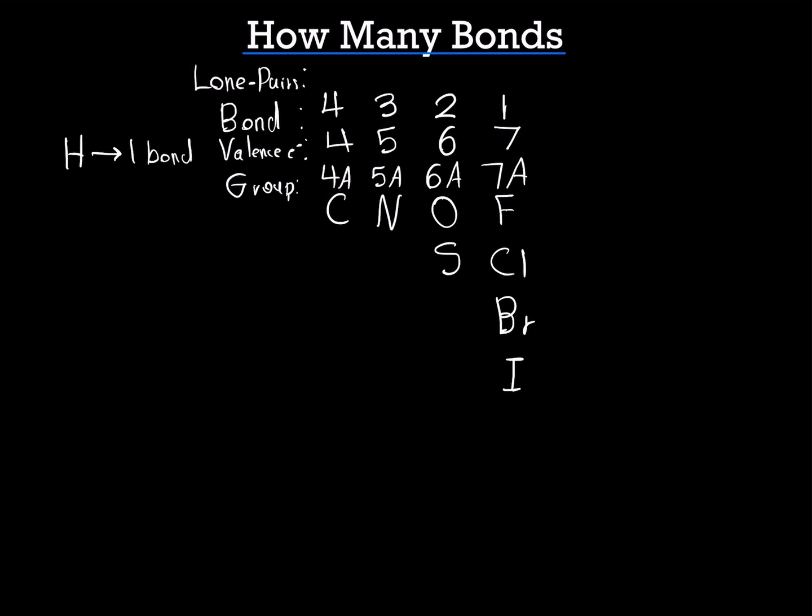So how many lone pairs are each of these elements going to have in their neutral state? Well, carbon has 4 bonds. And if each bond takes up 2 electrons, that means it's using 8 electrons to make bonds. So it doesn't have any extra electrons to create any lone pairs. So carbon has 0 lone pairs. Nitrogen is using 6 of its electrons to make 3 bonds. Because it needs 2 of its electrons for each bond. So it's going to have 2 electrons left over. And when you have a lone pair, it's going to be 2 electrons next to one another. So since nitrogen has 2 electrons left over, it's going to have 1 lone pair. And then for oxygen and sulfur, it's going to be 2 lone pairs. And the halogens are going to have 3 lone pairs.